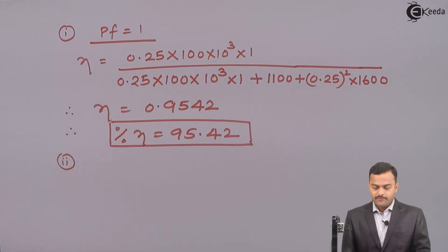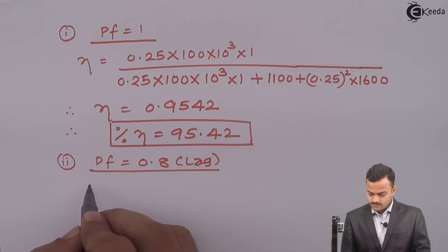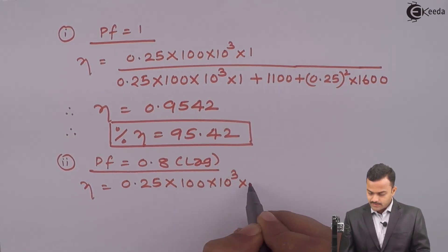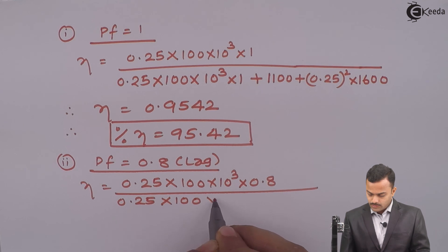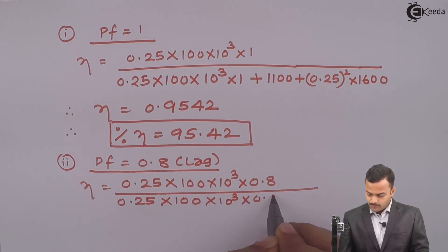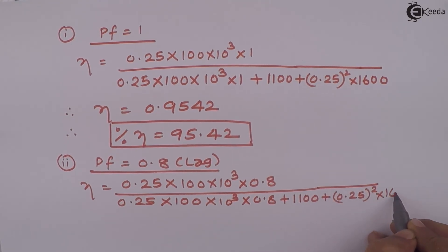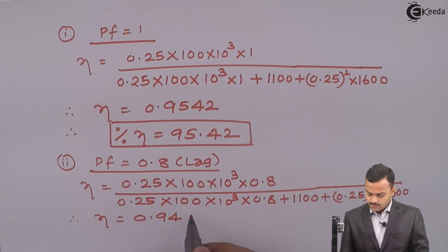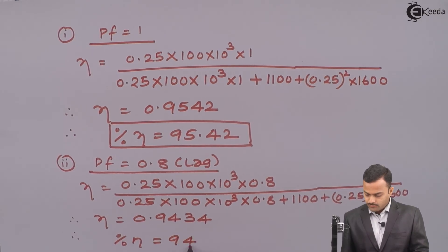Similarly, I can get efficiency at power factor 0.8 lagging. It is 0.25 multiplied by 100 into 10³ times power factor 0.8 upon 0.25 multiplied by 100 into 10³ multiplied by 0.8 plus 1,100 iron loss plus 0.25² times copper loss 1,600. If you solve, you will get efficiency 0.9434. In percentage, it is 94.34%.